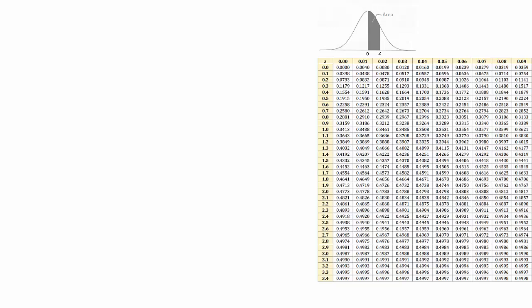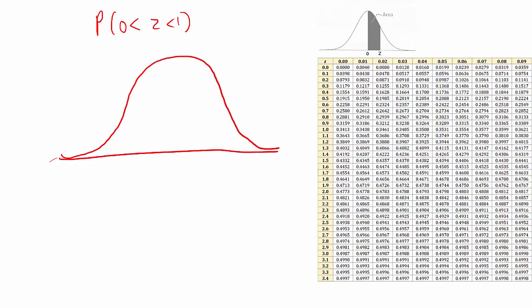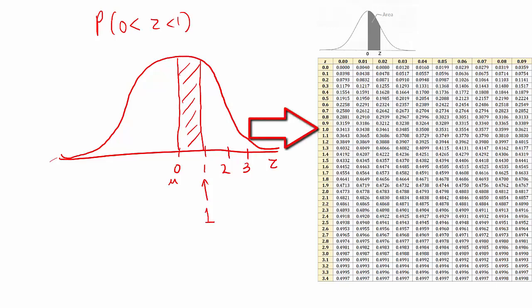In this first problem, we're going to find the probability between 0 and 1, written as the probability of 0 less than z less than 1. Let's draw out a normal curve showing 0, which is the mean, then 1, 2, and 3, representing number of standard deviations from the mean. I want to find the area between the mean and a z of 1. When I look this up in the table by looking up 1, I'm finding exactly the answer to my question — the probability between the mean and 1, which is the value given in the table.